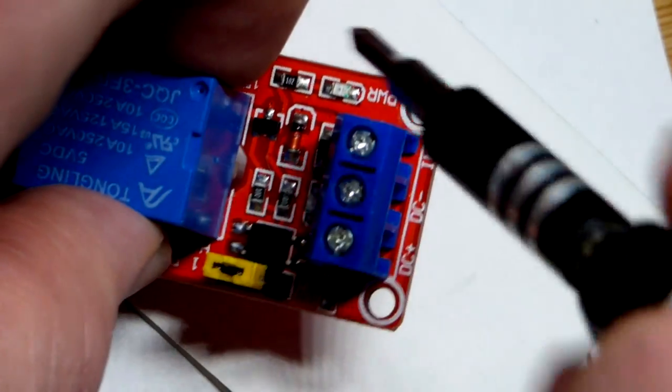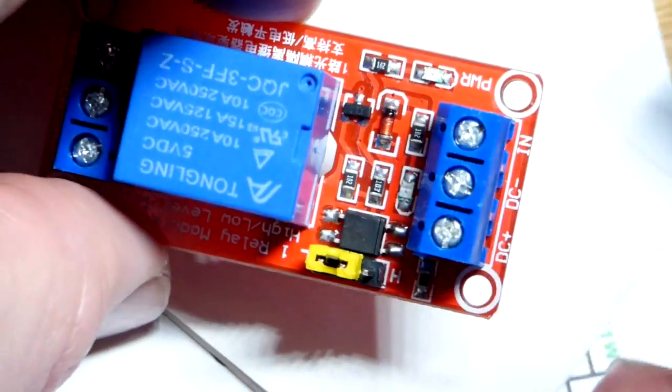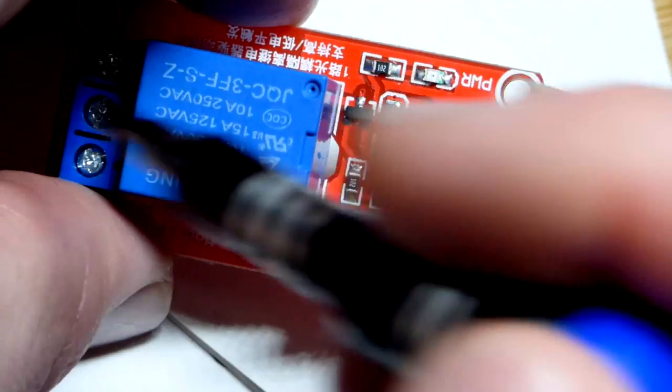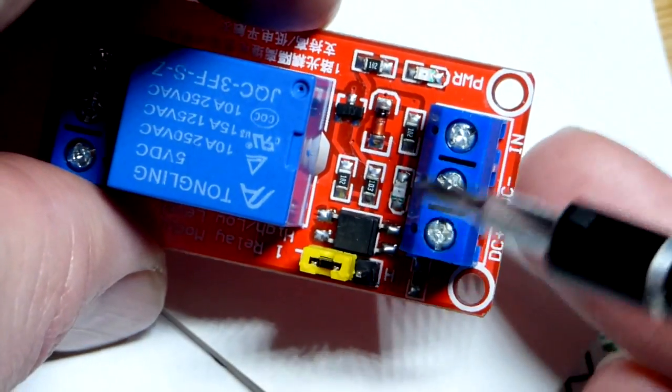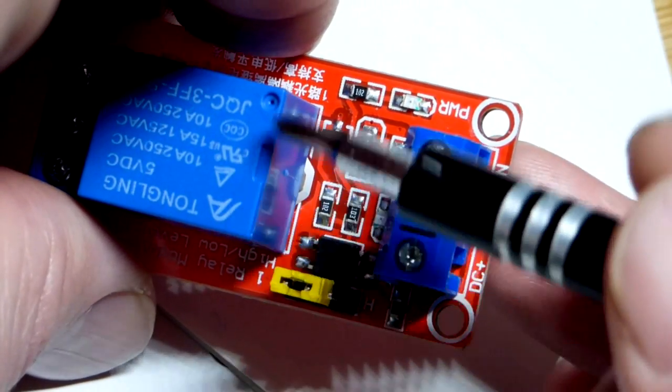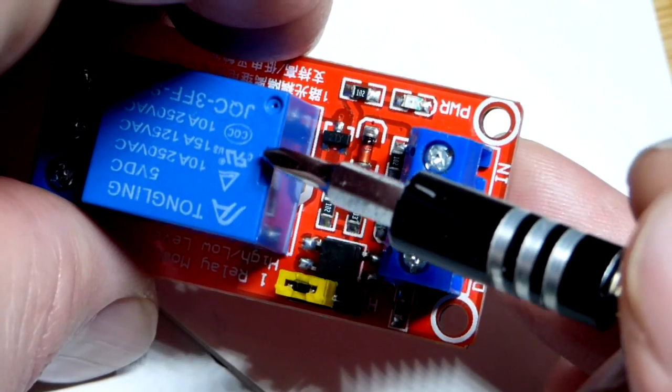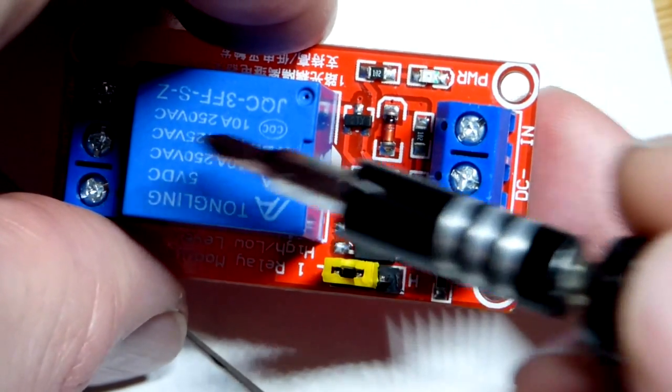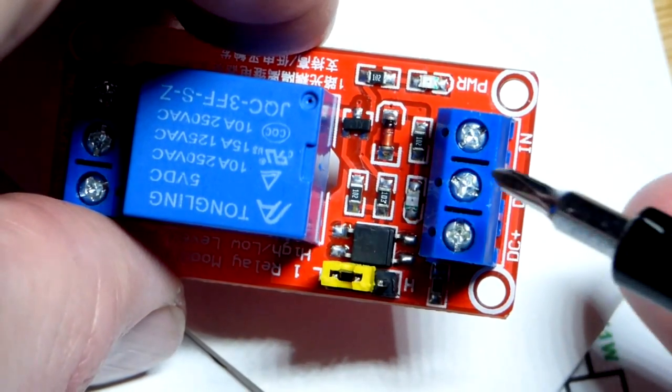Moving over to the other end of the relay. So we can kind of separate this relay with this side here versus that side there. So this is the part of the relay that controls whether the coil is energized or not. And it's a magnetic field that moves a mechanical switch.